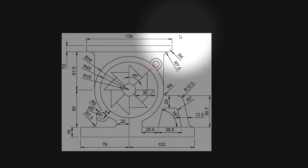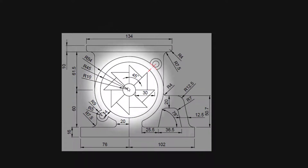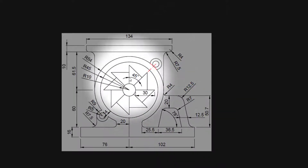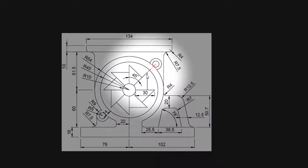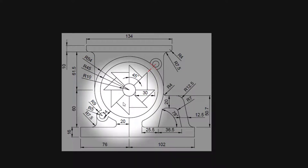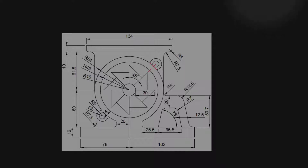Hello everyone and welcome to my YouTube channel. In this video we are going to draw this particular image that you are seeing on your screen. Before proceeding to AutoCAD, let's understand how we are going to proceed with each step. We will start with the central fan-like structure. This drawing will utilize commands like polar array, circle, trim, fillet, and offset. So without further delay let's proceed to the AutoCAD screen and draw it.